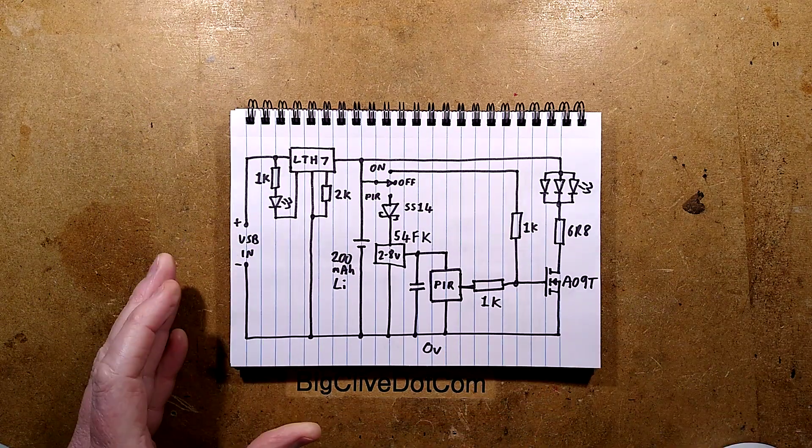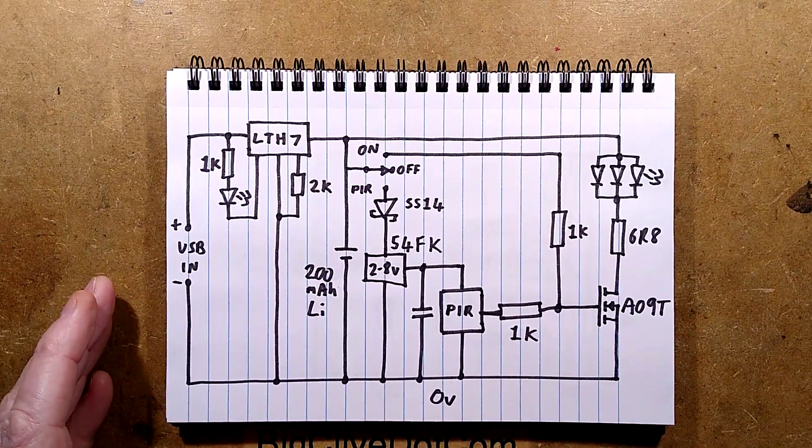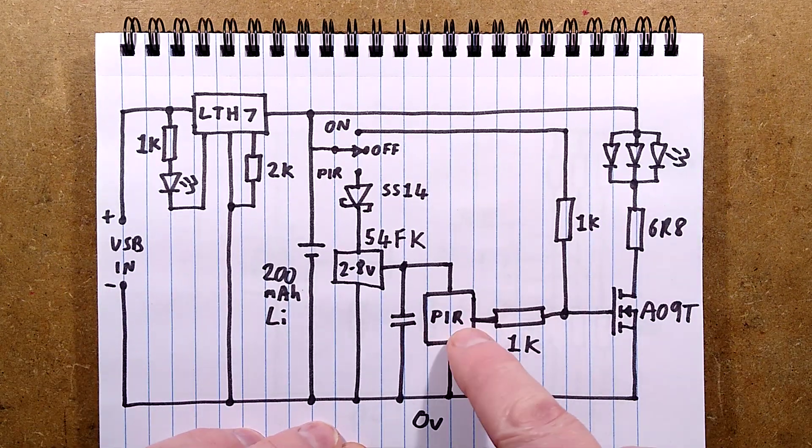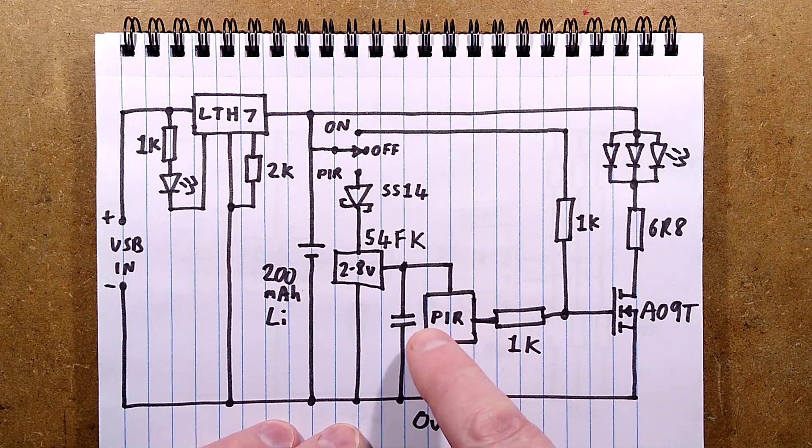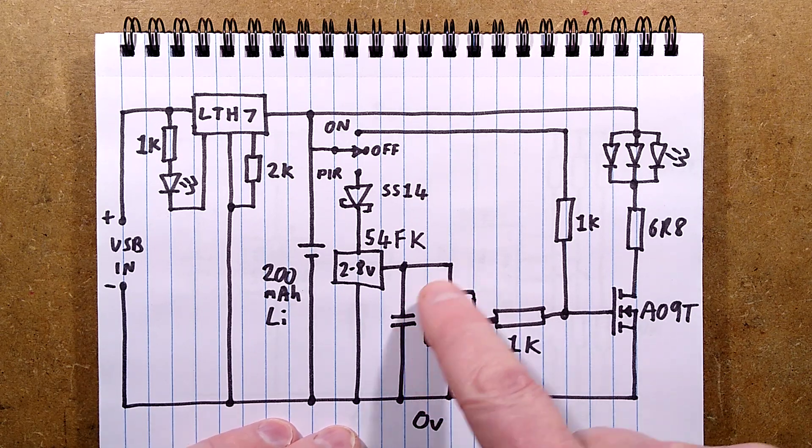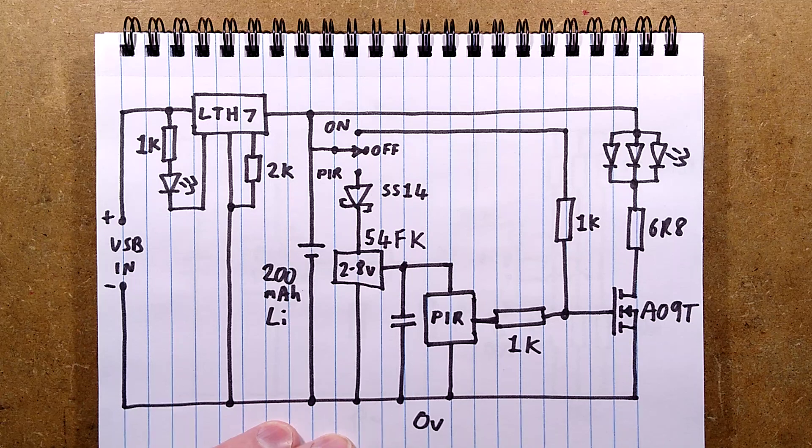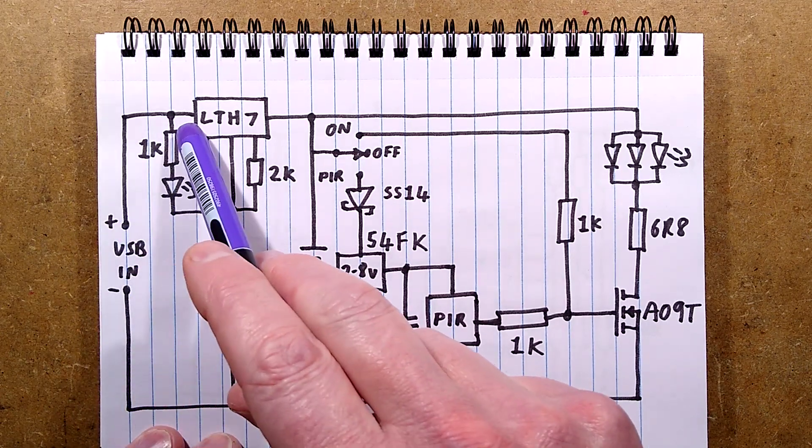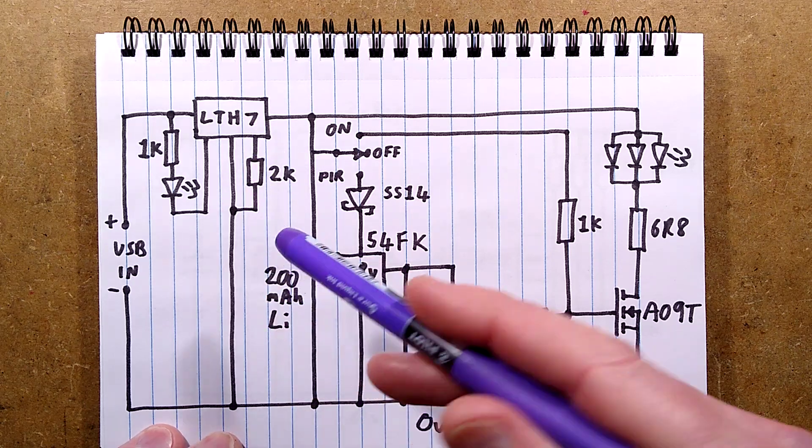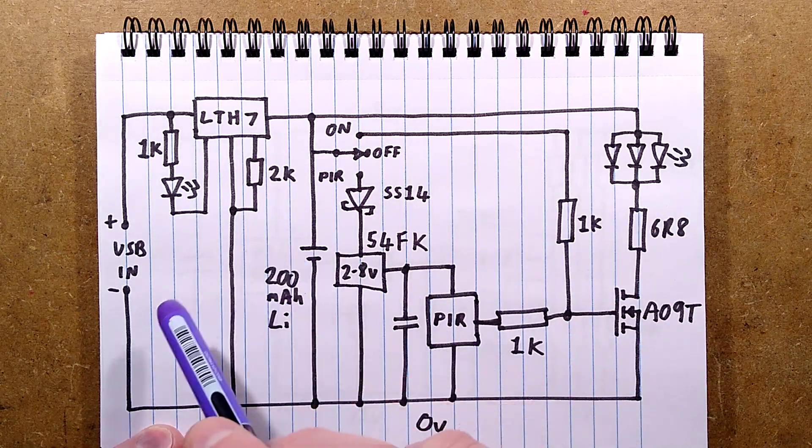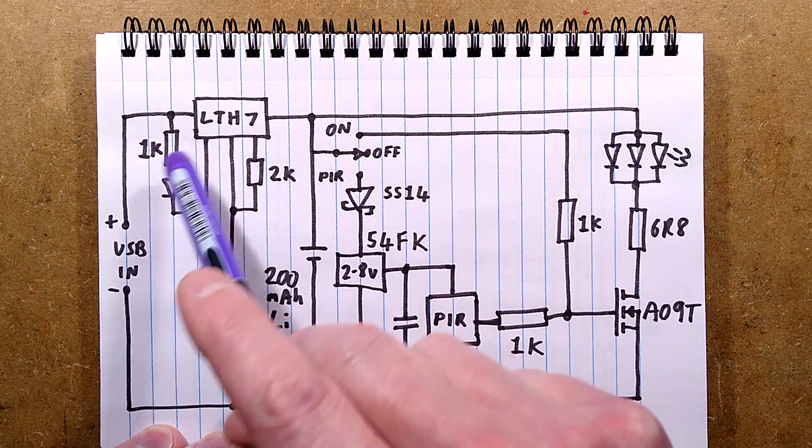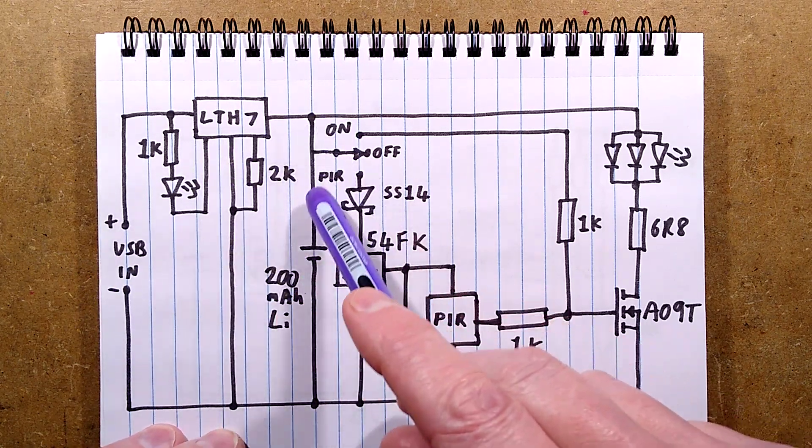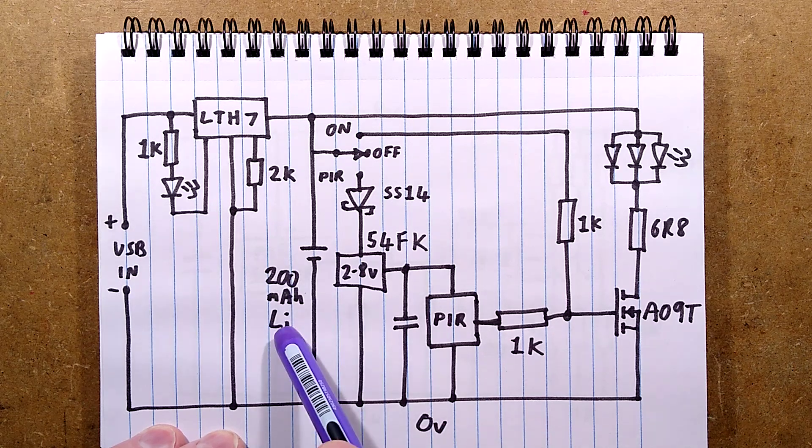I'm going to show you the main power supply up to the mystery PIR chip in two chunks. We've got the USB supply coming in at 5 volts to the LTH7 - really common circuitry. There's the 1k resistor in the LED for showing it's charging, the 2k resistor that sets the current for the 200 milliamp hour lithium cell.